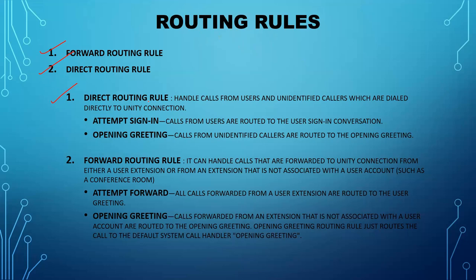The direct routing rule handles calls from users and unidentified callers which are dialed directly to Unity Connection. Whenever you press the messaging button on your Cisco IP phone, that call is going directly to Unity — it is not going somewhere else first and then to Unity — so it will follow the direct routing rule and hit it directly.